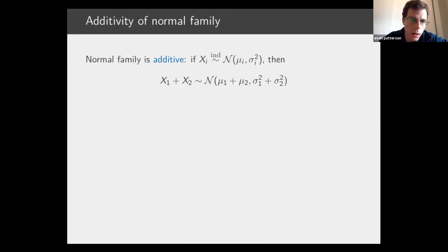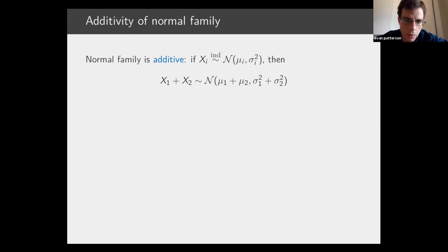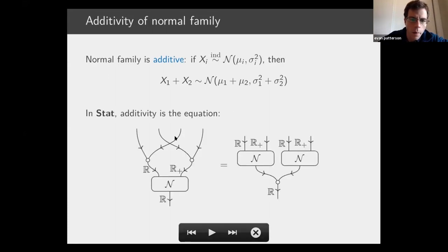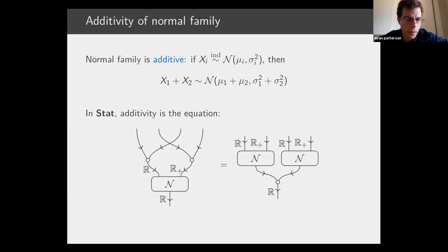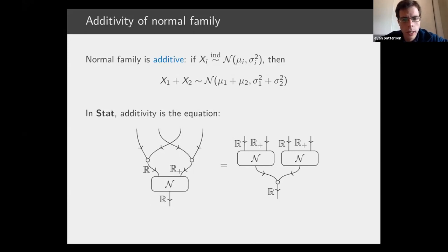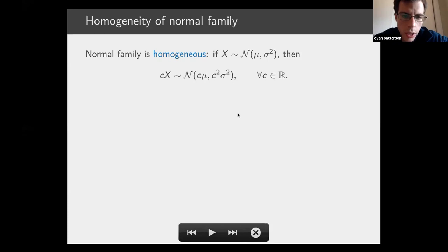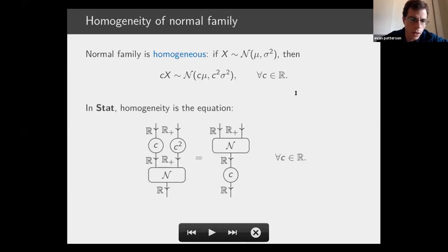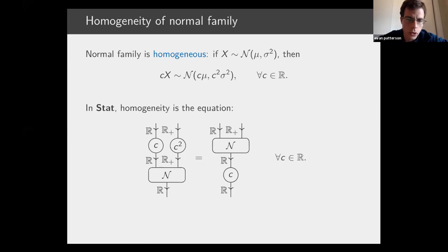To illustrate, let's look at how classic properties of the normal family manifest here. The additivity property of the normal family becomes an equation in Stat saying that the normal family as a morphism is additive — it preserves addition. We can also express that the normal family is homogeneous in the sense of being second-order homogeneous in the variance. Both properties can be expressed purely algebraically in this formalism. I'll abbreviate these two properties by saying the normal family is 'linear-quadratic' — almost linear, but not quite because the variance parameter σ appears squared.